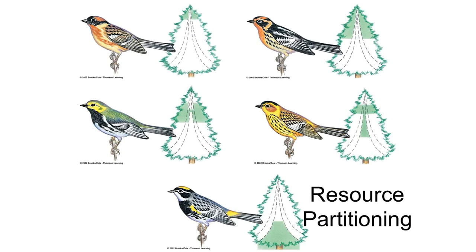Here's another example of resource partitioning. These are different bird species that all live in coniferous trees and all eat insects and similar resources, but each species has evolved to live in a different region of the tree — one exclusively in the crown, some in the middle range, one towards the core, and one down in the understory. They're all using the same resource but have partitioned it so they don't directly compete with each other as much anymore.